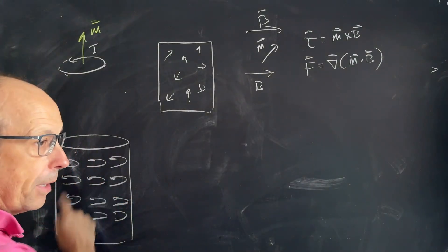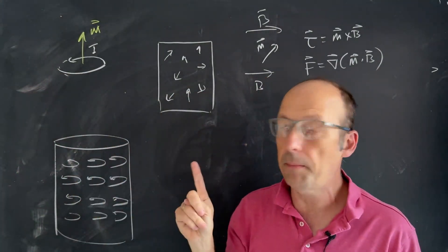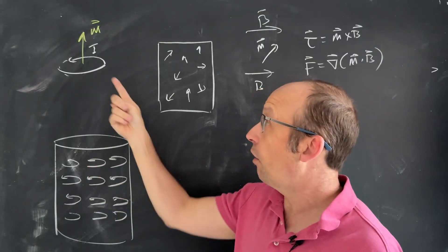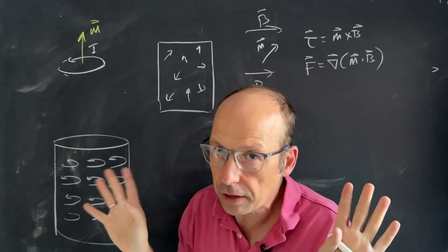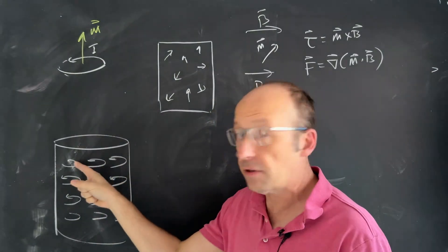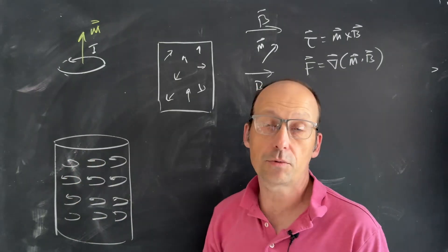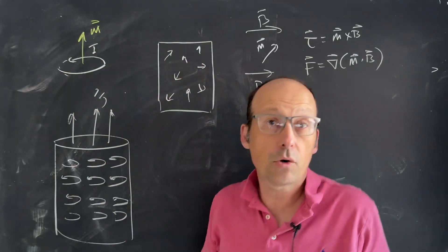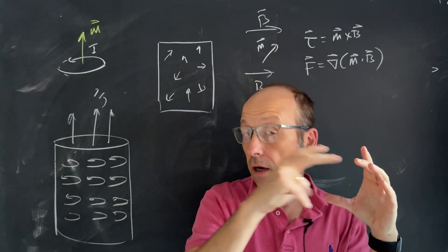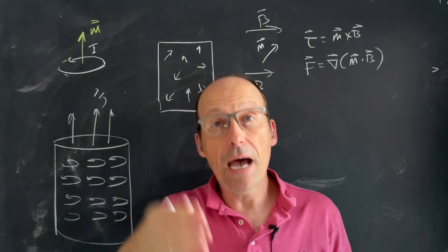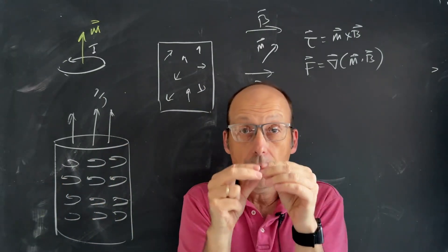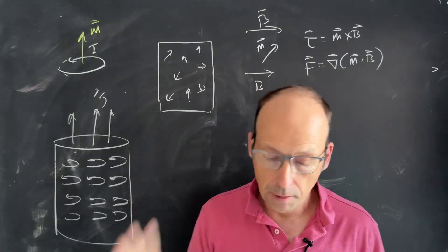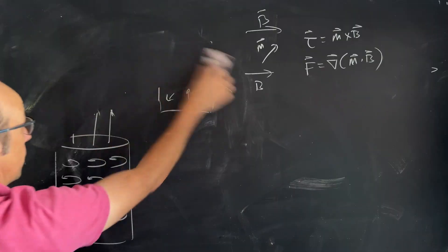There's a difference between bound currents and free currents. Imagine all these little dipole moments are little electron orbits — so these electrons are moving in circles, not getting anywhere. The net current in this situation would be zero, so that would be a bound current. A free current would be a current density J moving through the material. I can have both happening at the same time. It's a lot like bound versus free charges when we talk about the displacement field.